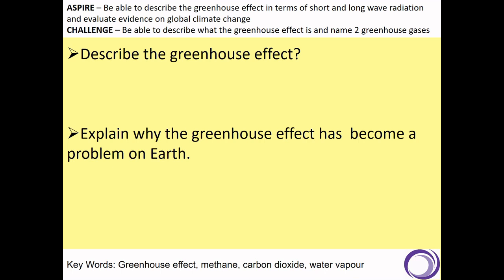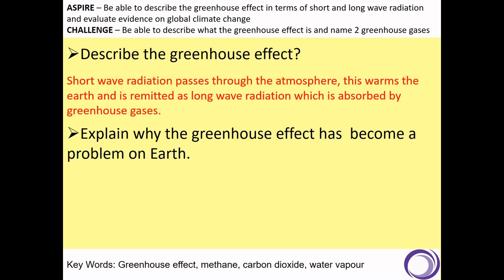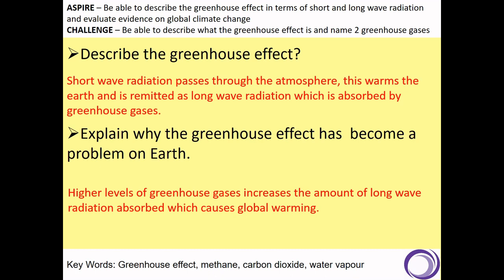Let's have a look at your answers and compare them to ours. It's really key that you use the phrases longwave and shortwave radiation. Shortwave radiation passes through the atmosphere, that then warms the earth and is re-emitted as longwave radiation, which is then absorbed by those greenhouse gases. To explain why the greenhouse effect has become a problem: higher levels of those greenhouse gases increases the amount of longwave radiation that is absorbed, which causes global warming.